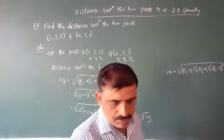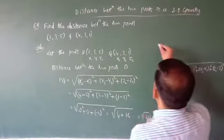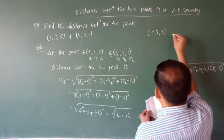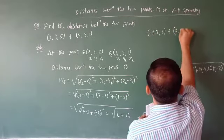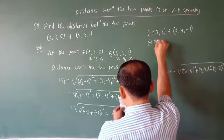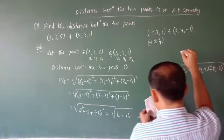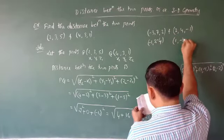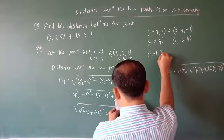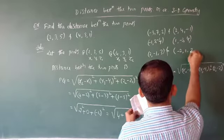Now solve these additional problems: find the distance between (−3, 7, 2) and (2, 4, −1); find the distance between (−1, 3, 4) and (1, 3, 4); and find the distance between (2, 3, 4) and (−2, 1, 3).